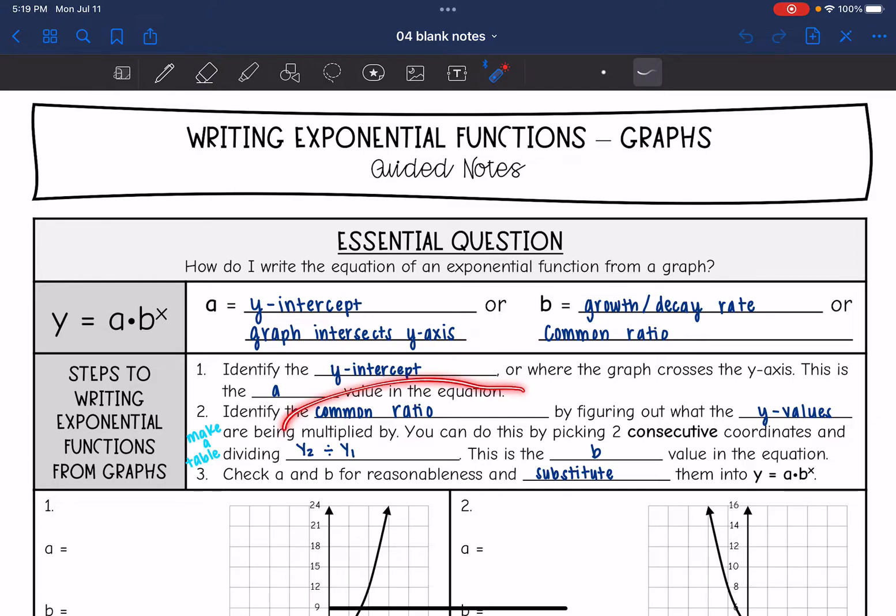You're going to find the common ratio by figuring out what the y values are being multiplied by. You can do this by picking two consecutive coordinates and dividing y2 divided by y1. This is the b value in the equation.